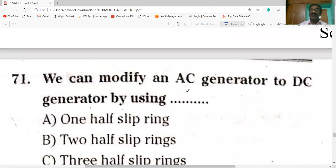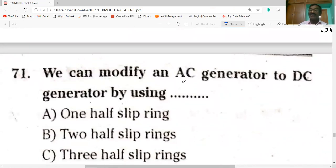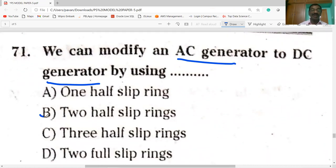We can modify an AC generator to DC generator by using two half slip rings.